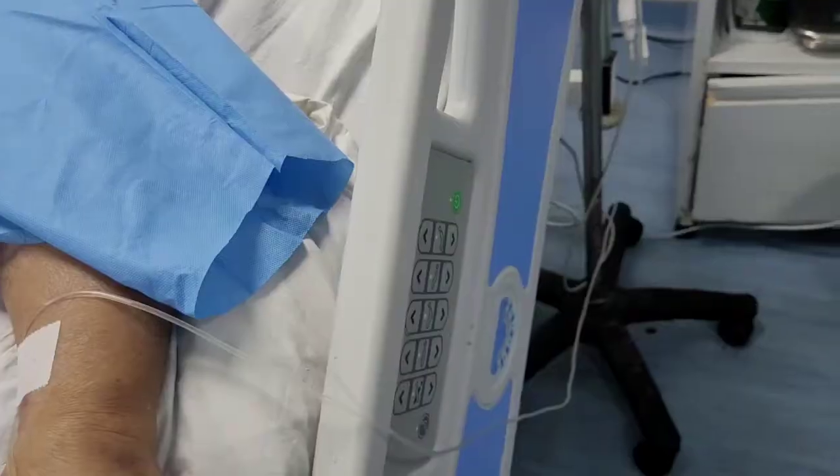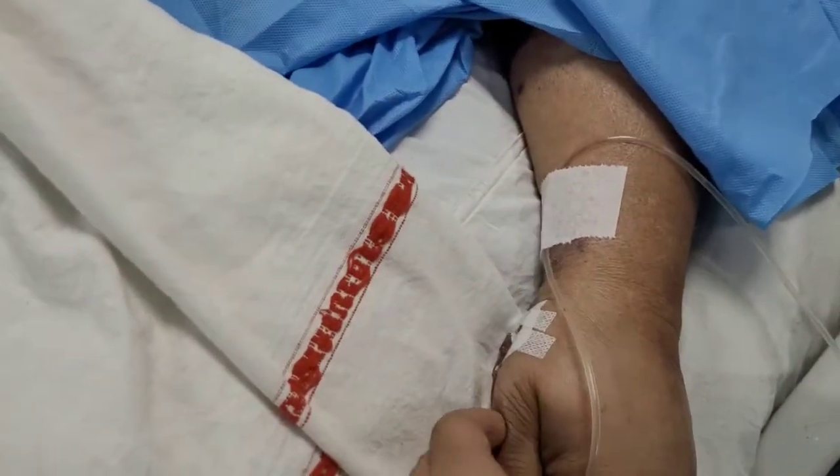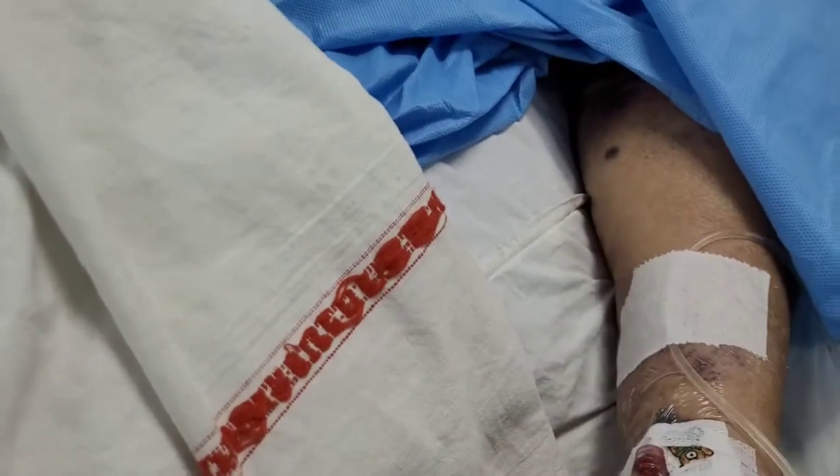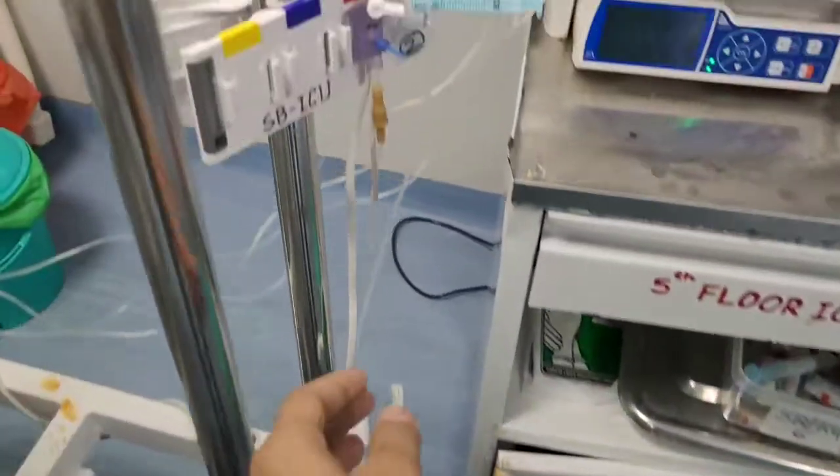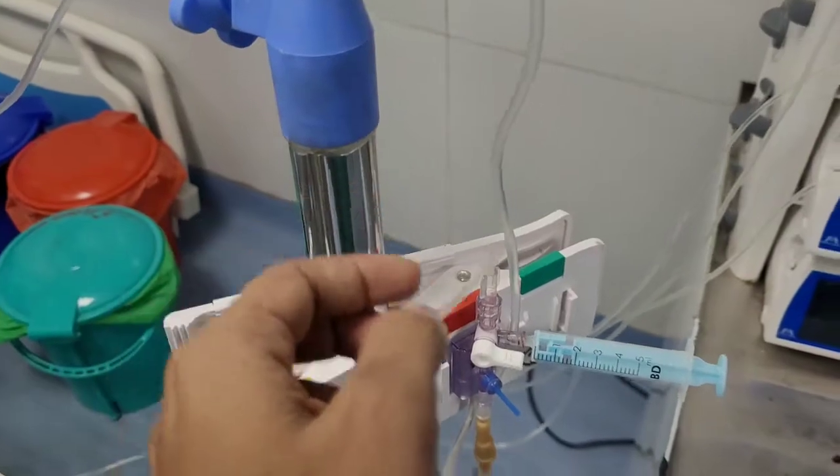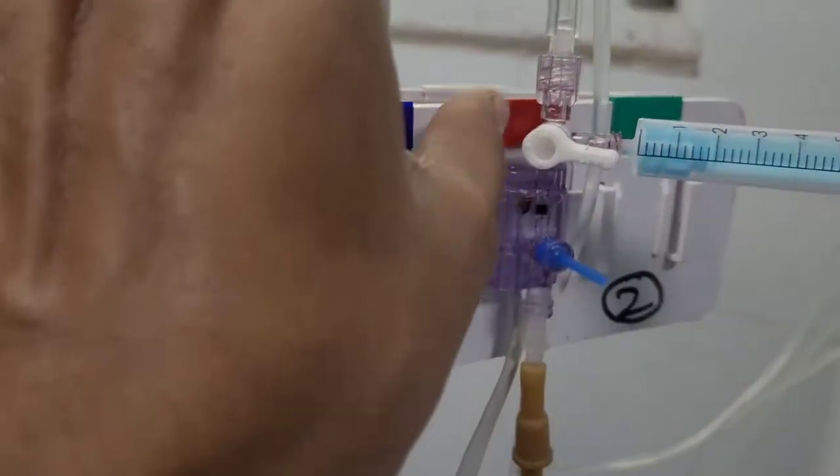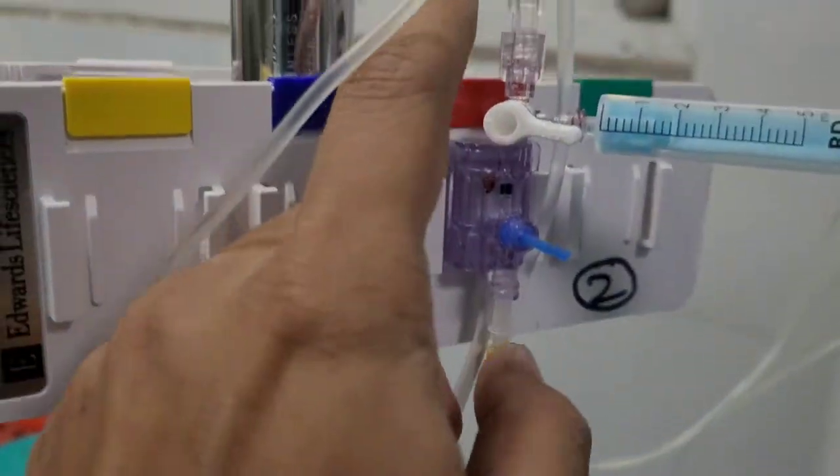Here in the left radial artery, this BD Leadercath is placed for arterial monitoring. This line is a PMO line which goes to the transducer dome. This is the main mechanism of the arterial transducer.